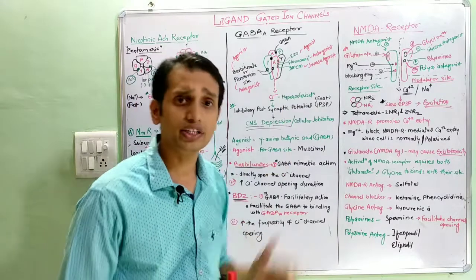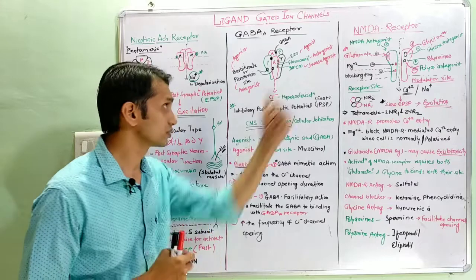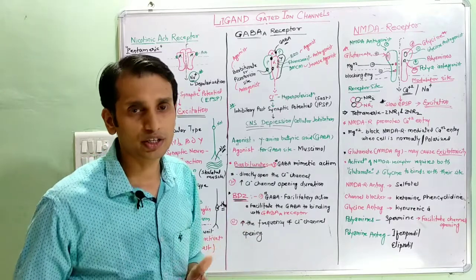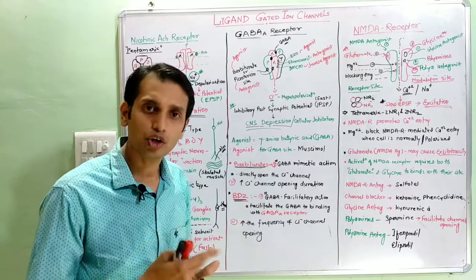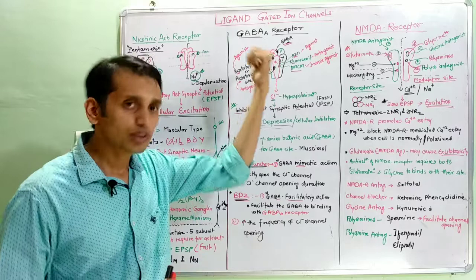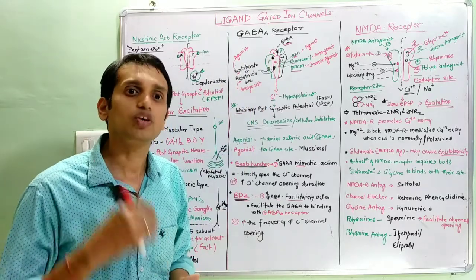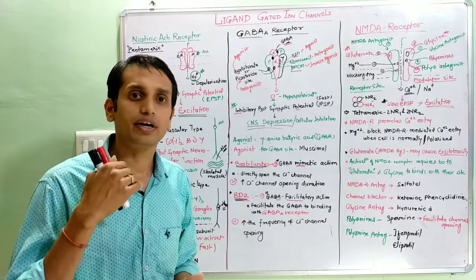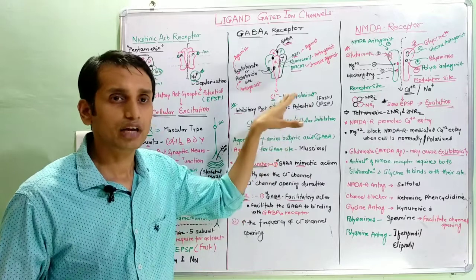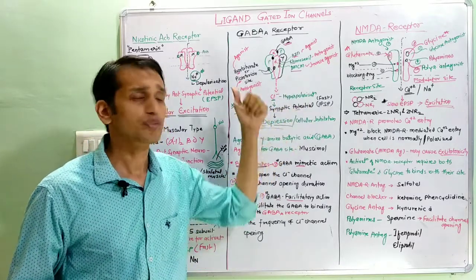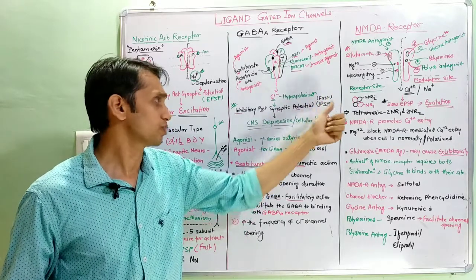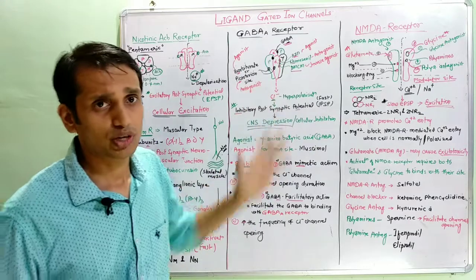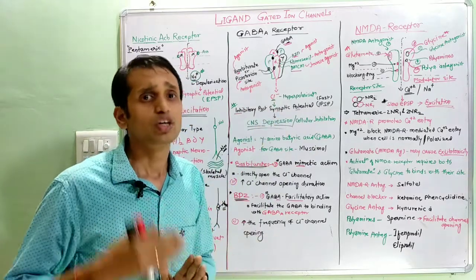Next are GABA-A receptors, mainly found in the CNS — the brain. They also have a pentameric structure composed of alpha, beta, and gamma subunits: two alpha, two beta, and one gamma. Activation of GABA-A receptors causes opening of chloride ion channels — it is a ligand-gated chloride ion channel. Chloride ion entry causes hyperpolarization of the cell, producing inhibitory post-synaptic potential (fast IPSP), leading to CNS depression, CNS suppression, or cellular inhibition.